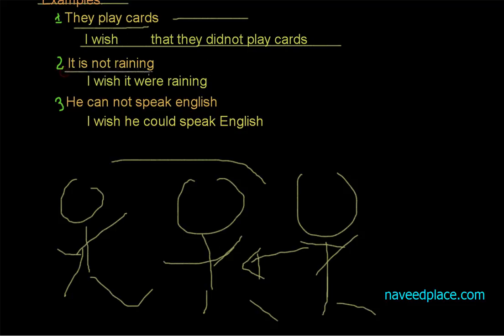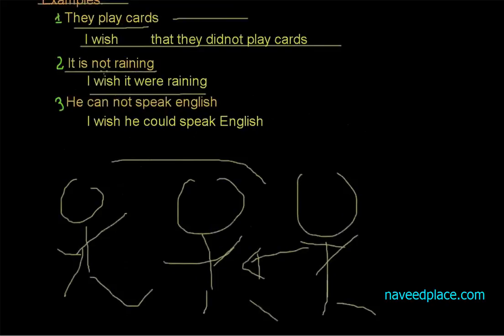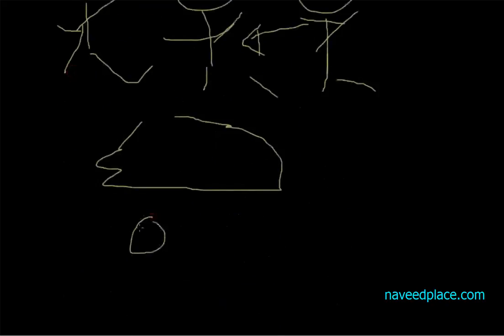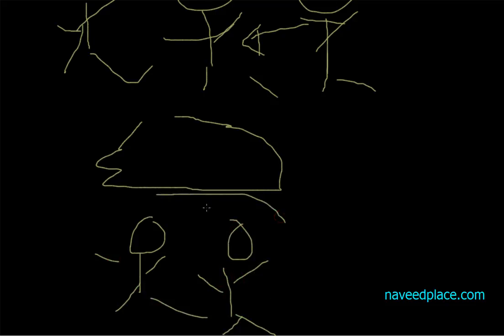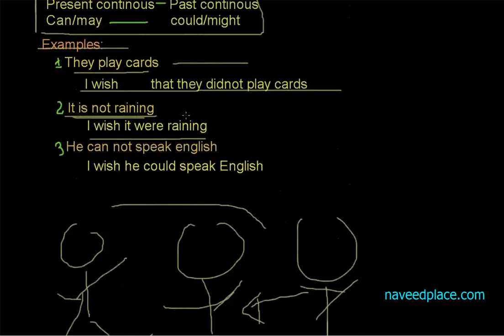The second example is: 'It is not raining.' For example, you and your friends are going somewhere and you say, 'It is not raining. I wish it were raining.' So the reality is that it is not raining, but what is your wish? That it were raining — the positive of that reality.